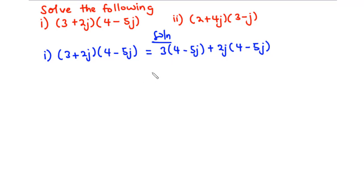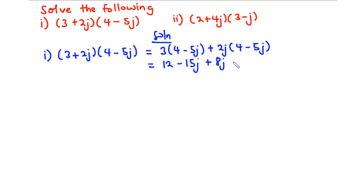Now let's multiply across. 3 times 4 is 12, and 3 times -5j gives -15j. Then 2j times 4 is 8j, and 2j times -5j gives 2 times -5, which is -10, and j times j is j². We know that j² equals -1.